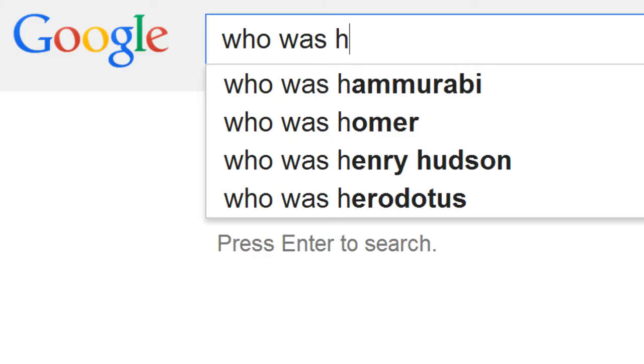Who was Hammurabi? Hammurabi was a Babylonian king in the 1700s BC, most known for his Code of Hammurabi. This code is the oldest large set of laws that historians have found. It dispenses eye-for-an-eye justice, changes punishment based on social class, and makes you hope that if your dad was a carpenter, he was a really good one.